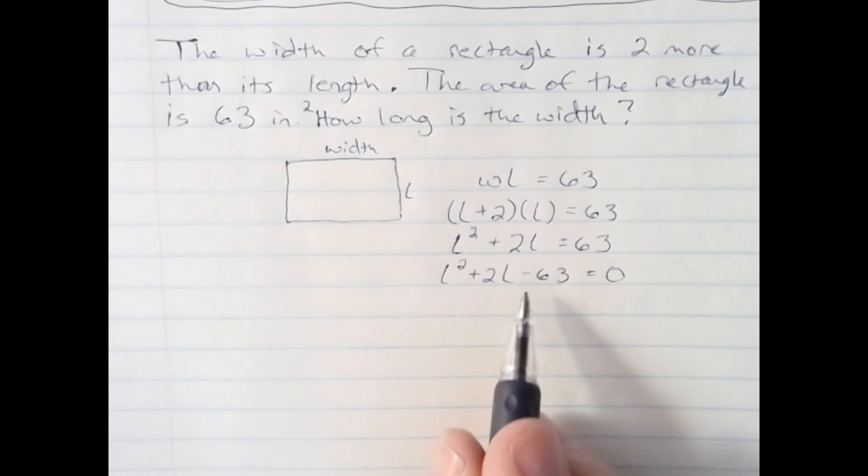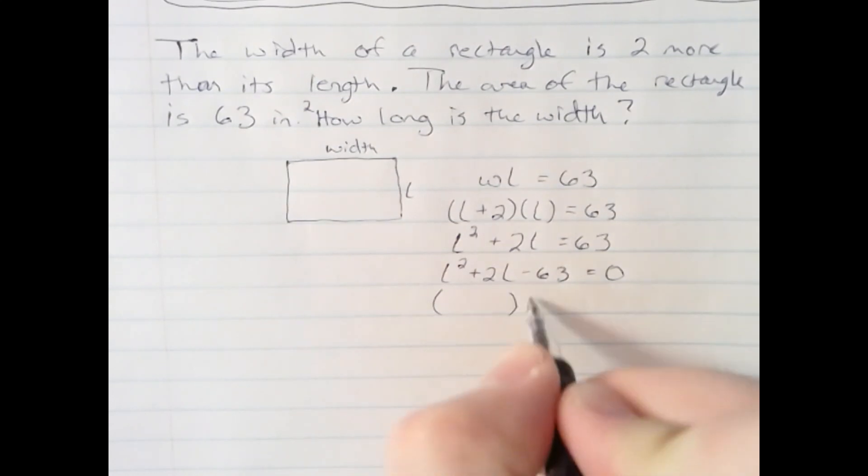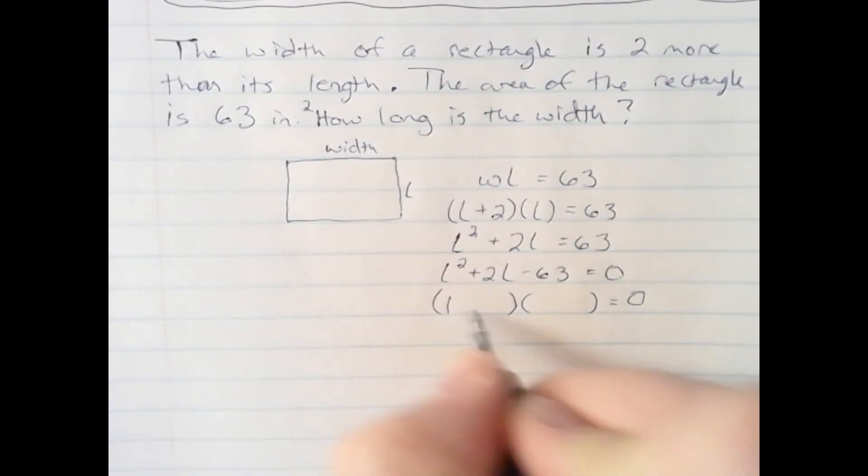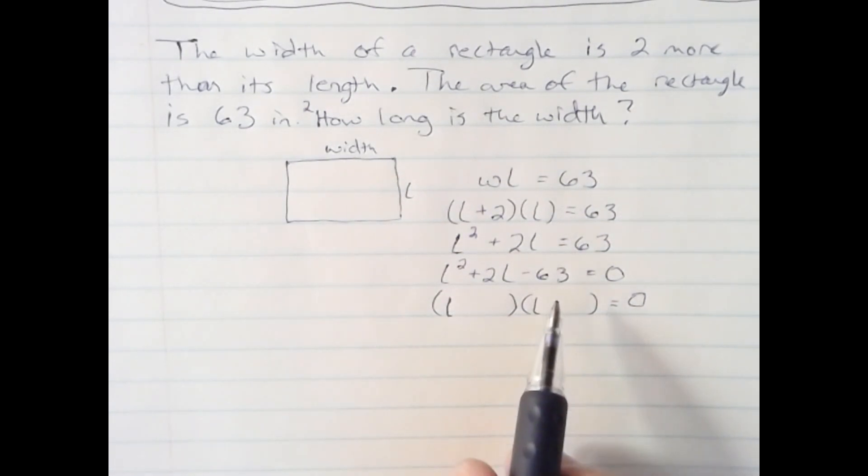And I can factor this. I just have to find factors of negative 63 that add up to a positive 2. I'll first set up my answer, my factored answer, with an L and an L. And factors of negative 63.